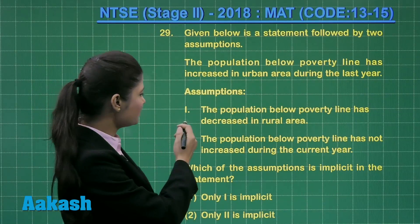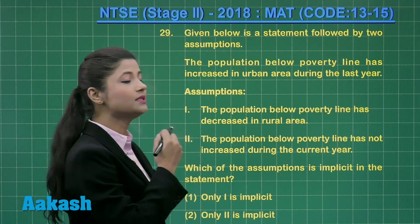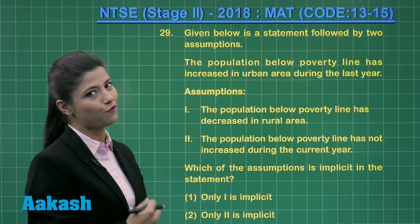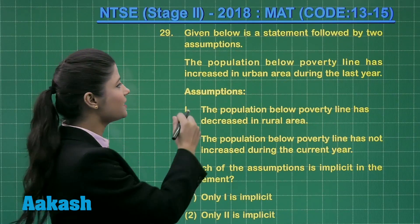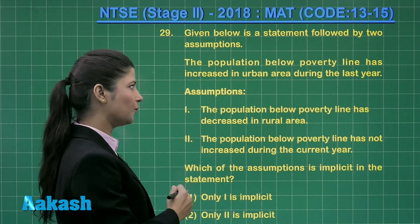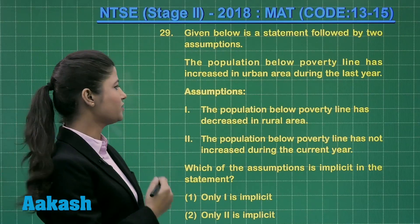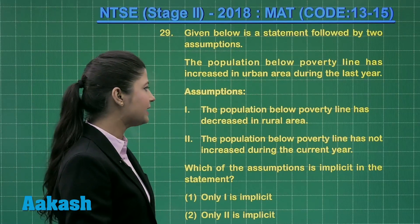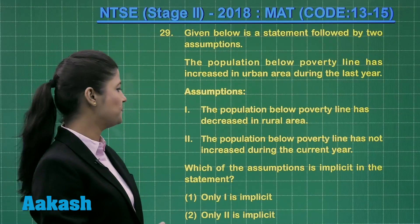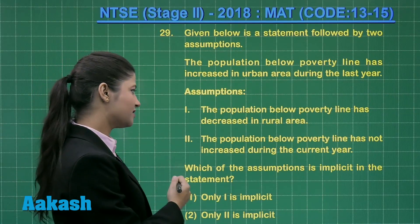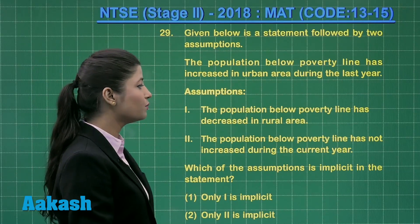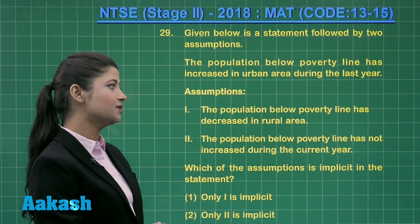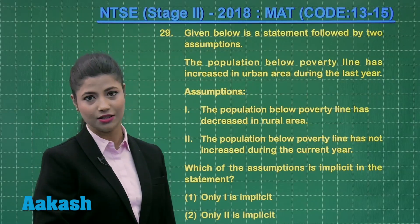Two assumptions are given, and we need to choose which assumption correctly follows the given statement. The first assumption is: the population below poverty line has decreased in rural area. The second assumption is: the population below poverty line has not increased during the current year.